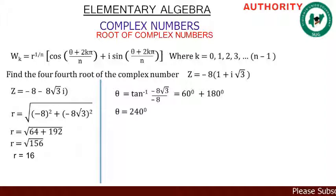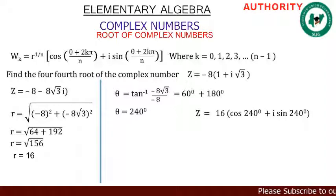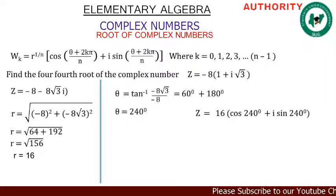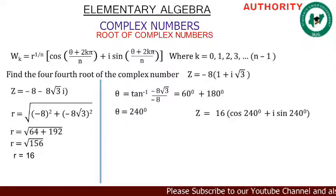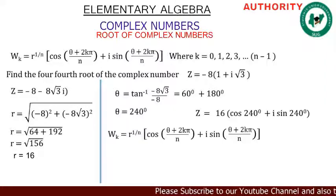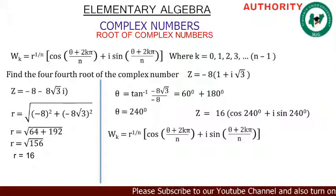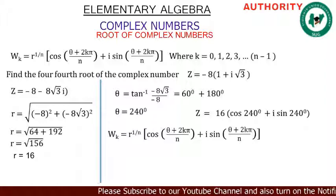Now let's represent z in polar form. We have found r and θ, so z = 16 [ cos 240° + i sin 240° ].